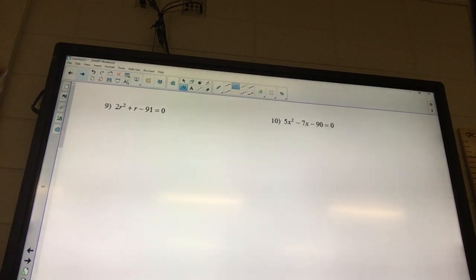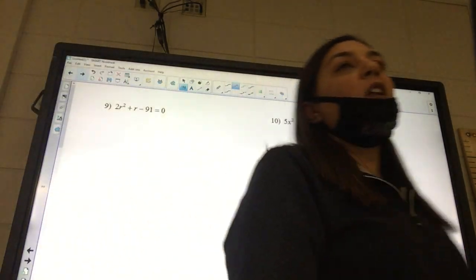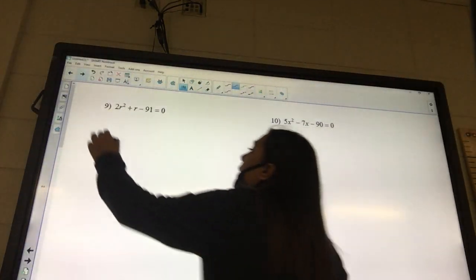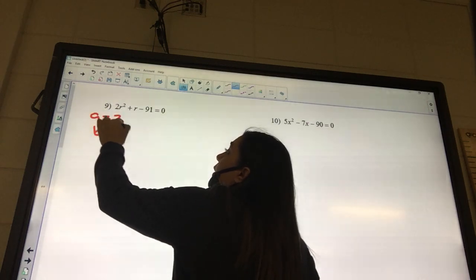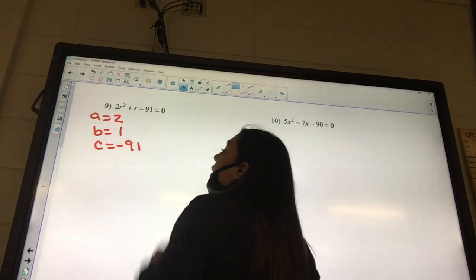Okay, look at 9. Bellinger, what is our A value? 2. Huh? 2. What is our B? 1. C. Negative 10. Okay.